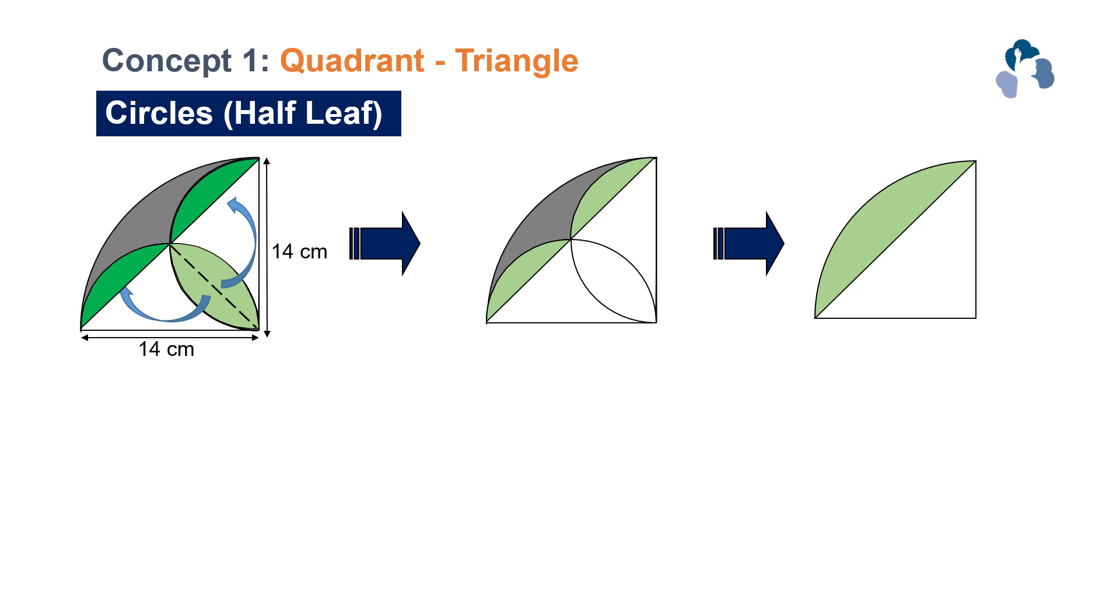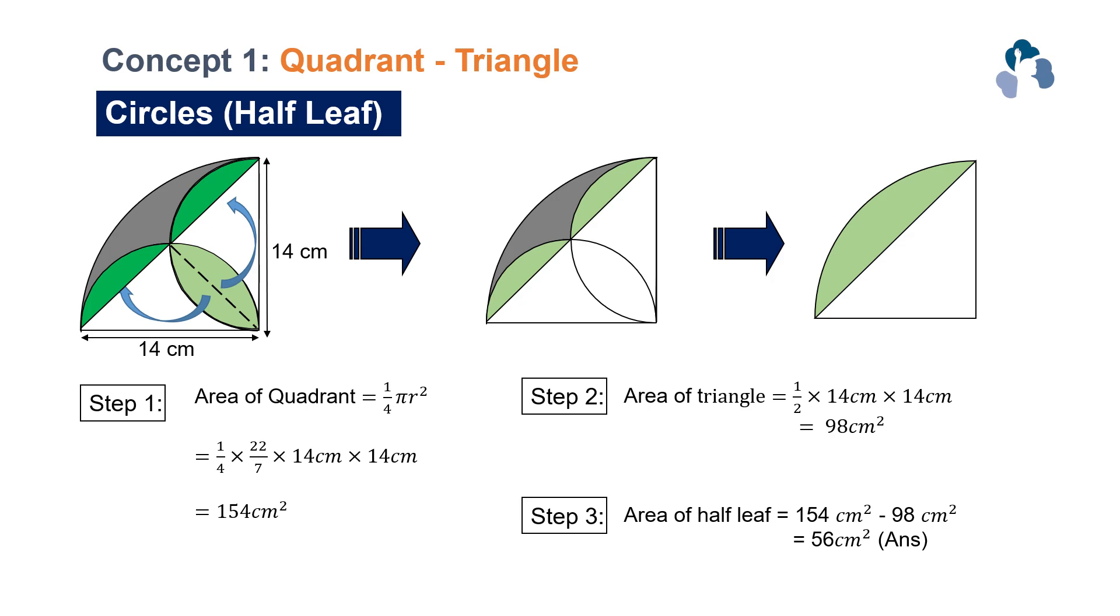Do you remember what we have learnt in the first diagram? We take the area of the quadrant minus the area of the triangle. And so this is how you can solve this second question.